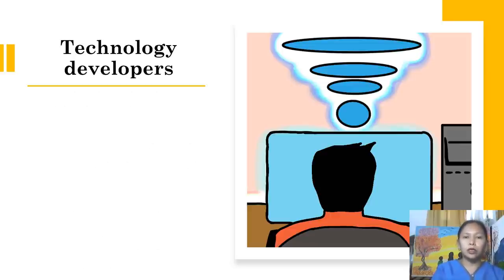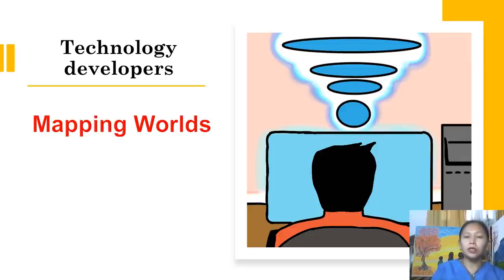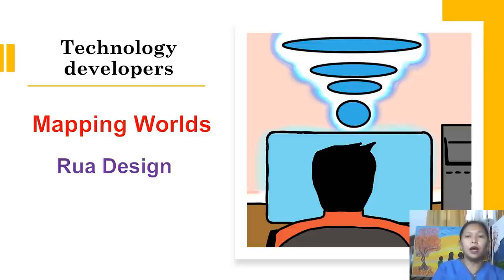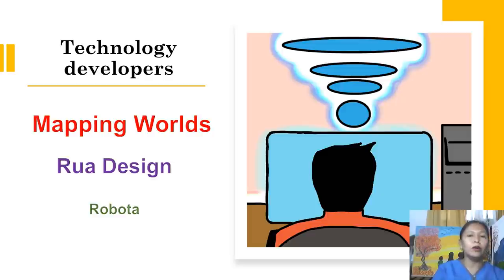Technology developers include Mapping Worlds, which recognizes the power of data visualization with broad expertise in cartography, charting, interactive design, and database technology. We also have Robot Design, which provides website programming and consultancy services for a variety of organizations, mainly in the field of international and community development. We also have Robota, a company that develops software apps, websites, and more complex IT solutions for a variety of clients.